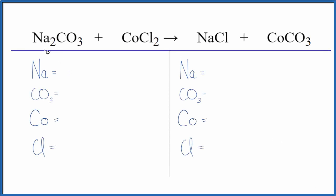In this video, we'll balance the equation for Na2CO3 plus CoCl2. We have sodium carbonate and cobalt-2 chloride. We'll also look at the reactants and see if we have a precipitate forming. So let's balance the equation by counting the atoms up first.